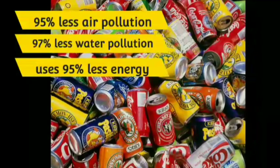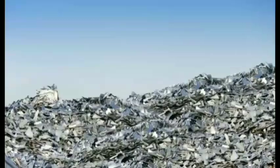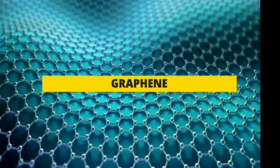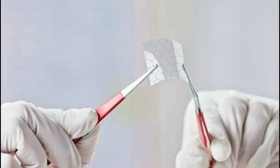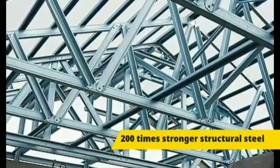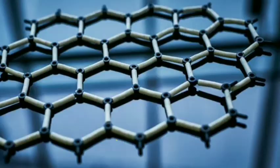Graphene is made from graphite, a form of carbon that occurs as a mineral in some rocks. Graphene is one of the world's tiniest and strongest materials and is light, flexible, and stretchable. A single layer of graphene is 150,000 times thinner than a human hair and 200 times stronger than structural steel. It is also a good conductor of electricity and conducts heat better than any known material.